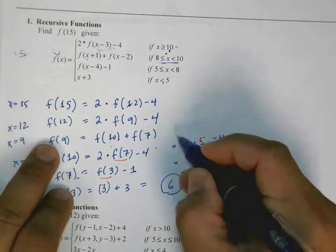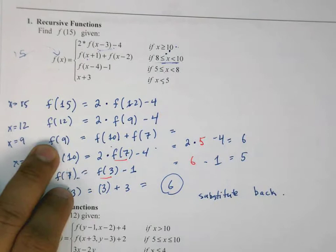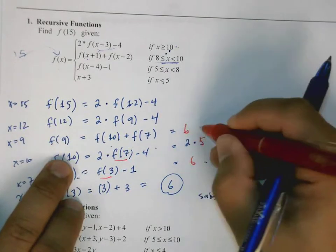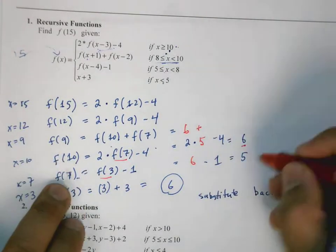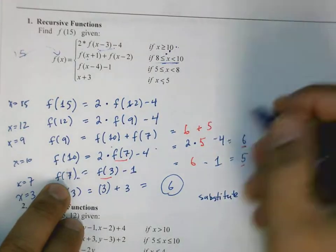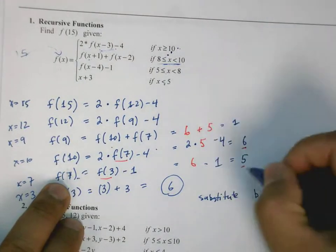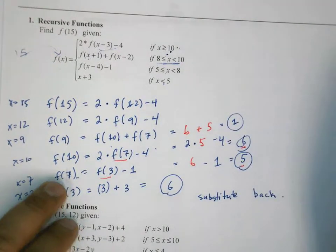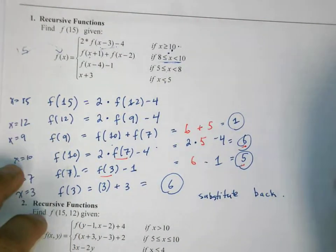f of 9, which is f of 10, that's 6, plus f of 7, that's 5. So that gives me 11. And these are, I should circle these, these are small solutions in the process to the big solution.